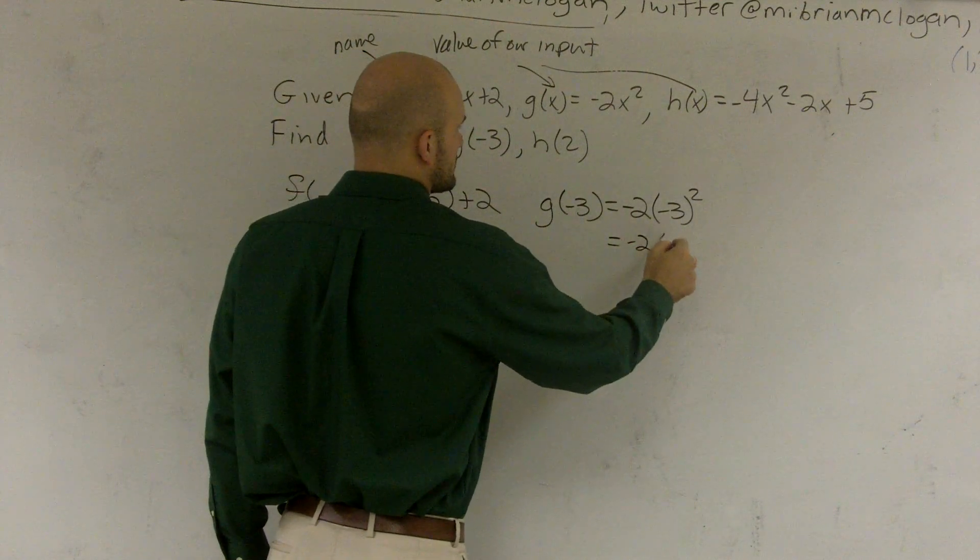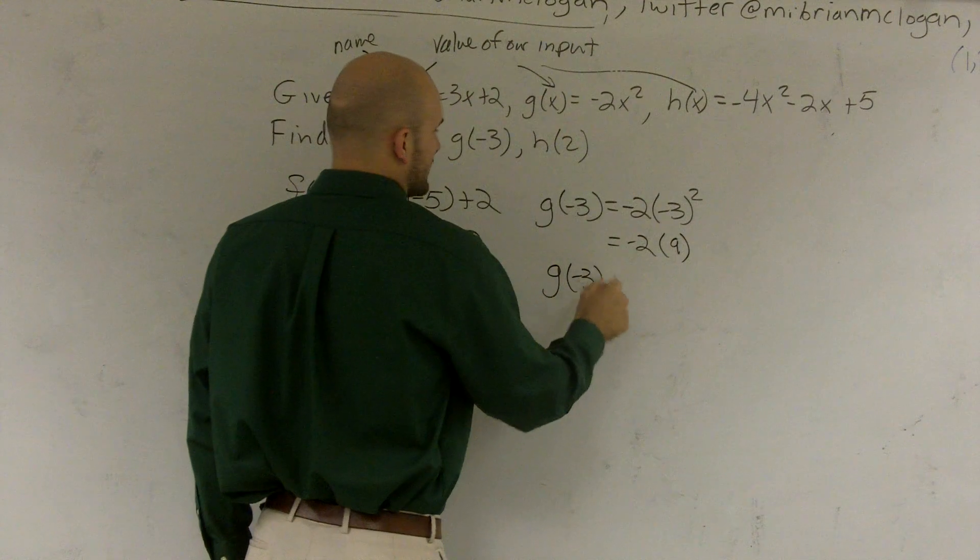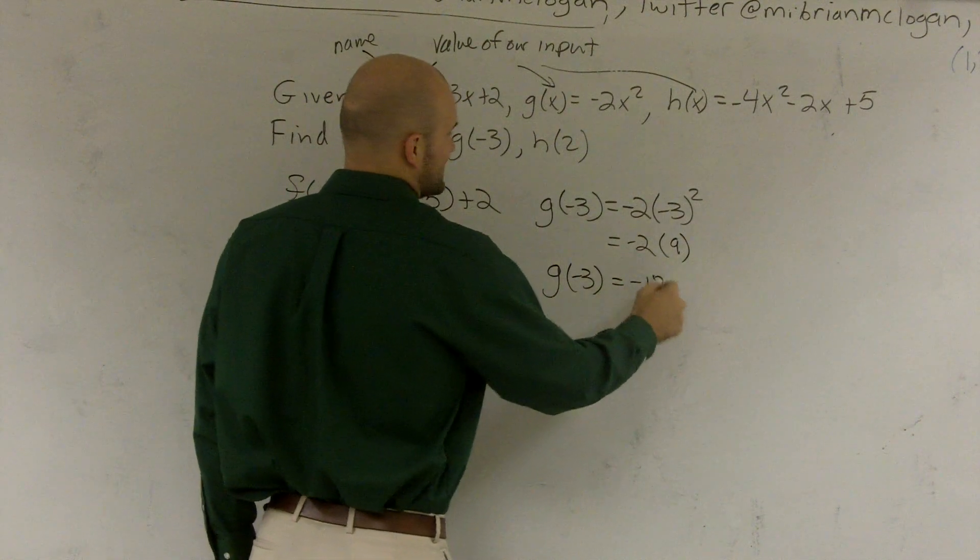So I have negative 2 times a positive 9. So therefore, I have g of negative 3 equals negative 18.